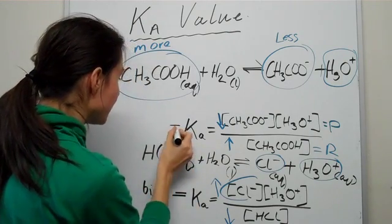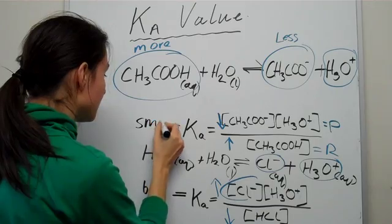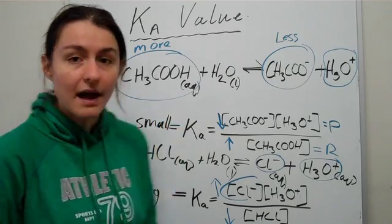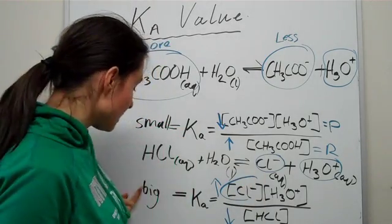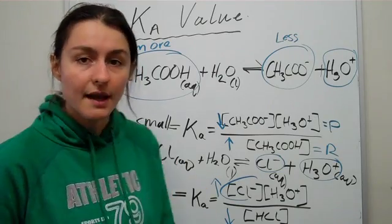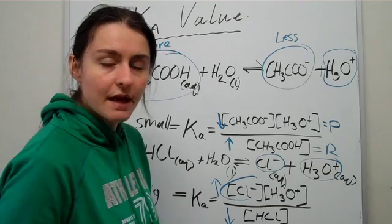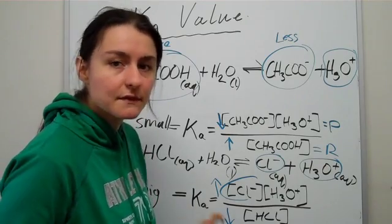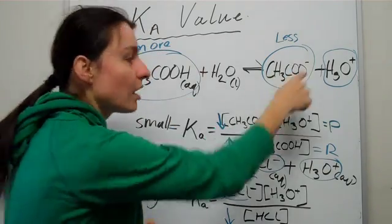Which means that when you have a big Ka value, it means that you have a very powerful acid. When you have a small Ka value, it means that you don't have a very powerful acid. The acid isn't very good at ionizing.